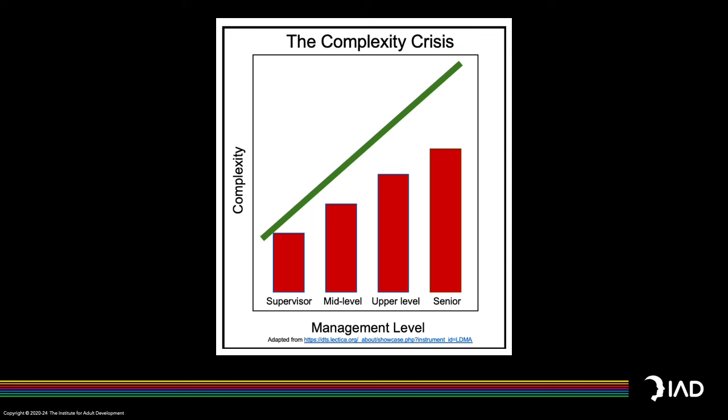When it comes to the intersection of change and leadership, the opportunity and the problem boil down to complexity. As a leader rises in the ranks, her responsibilities and the complexity of her role rise together. The red bars represent what the leader brings to the table to meet the demands of each career level; green represents the level of complexity at each level. If the leader's ability to handle complexity cannot keep pace with their role, they will not meet the organisation's leadership expectations.